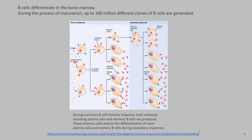When a B cell binds an antigen, it gets activated and then forms many clones of itself. During a primary immune response, the cell gets activated and forms multiple clones. Once activated, they become plasma cells — specialized cells that secrete large amounts of antibodies. During an acute infection, you have a lot of plasma cells circulating, secreting tons of antibodies directed against the specific portion of the viral antigen.